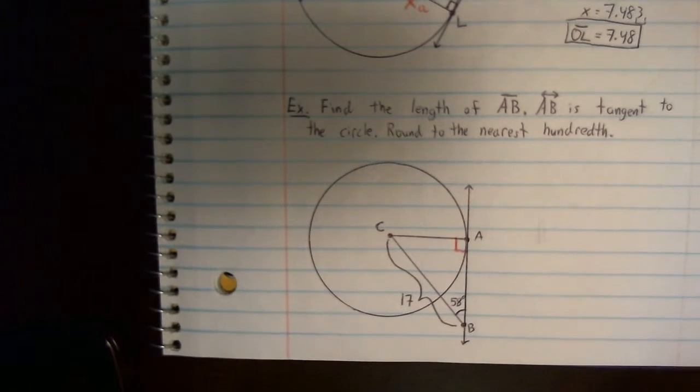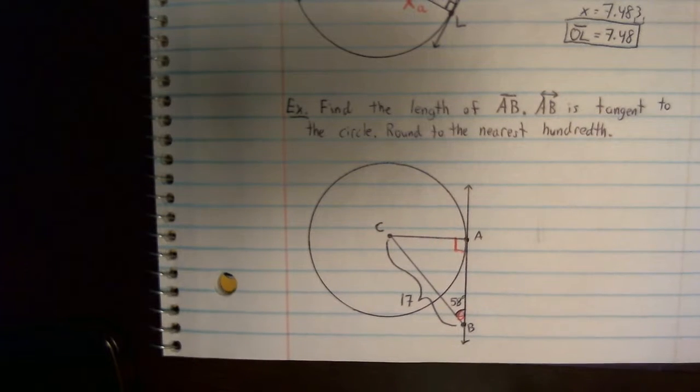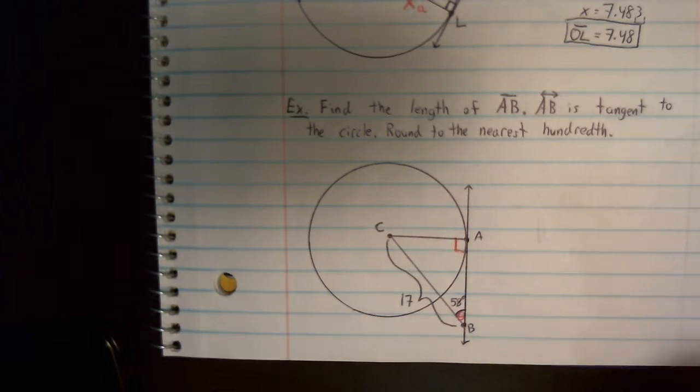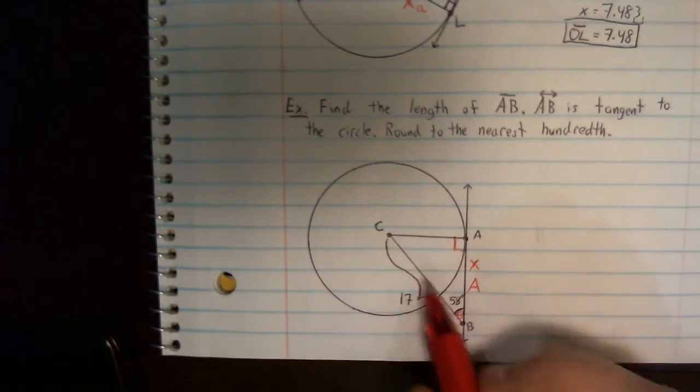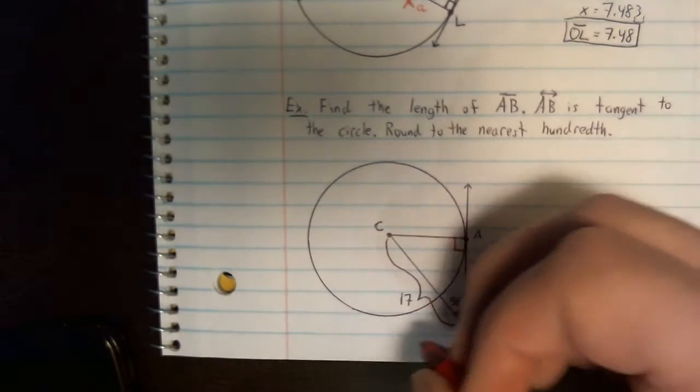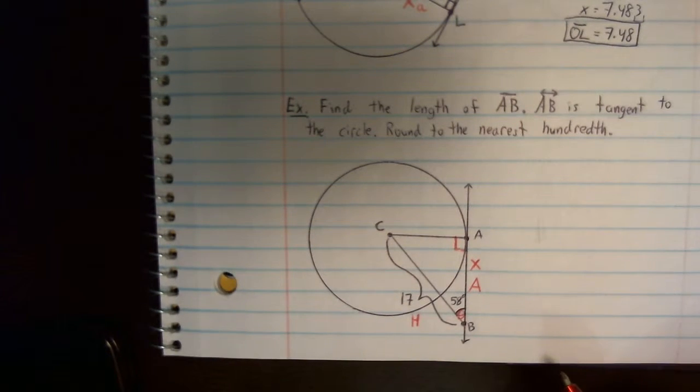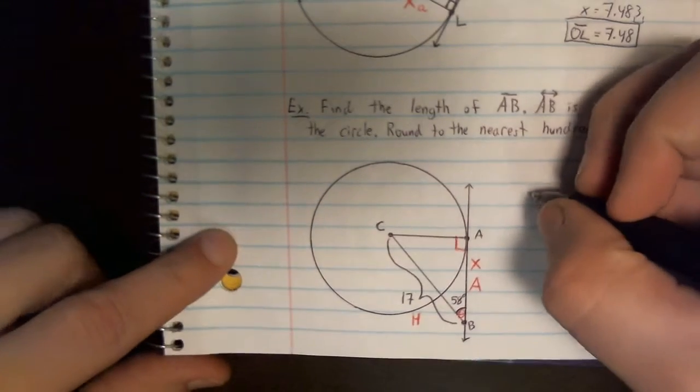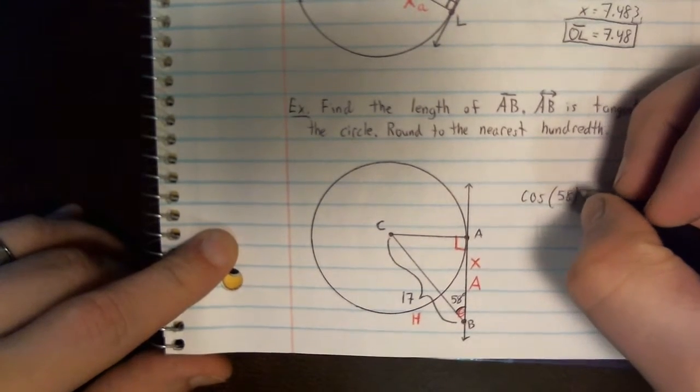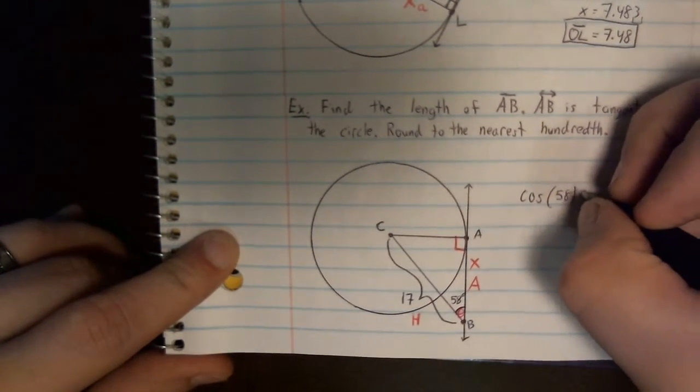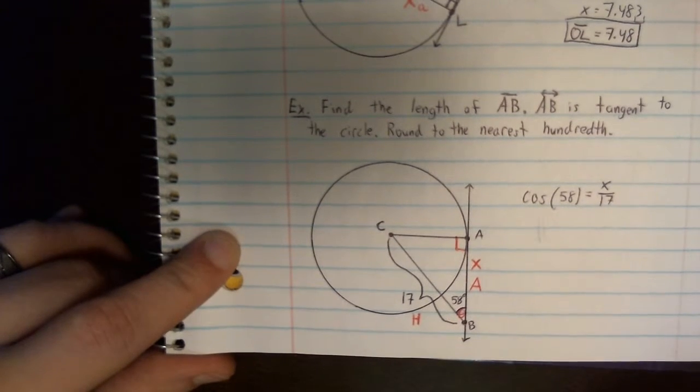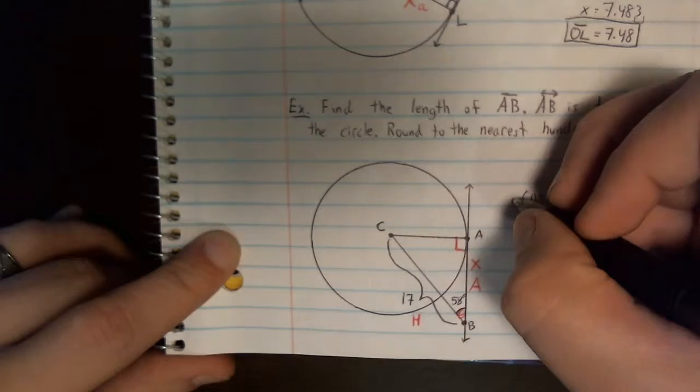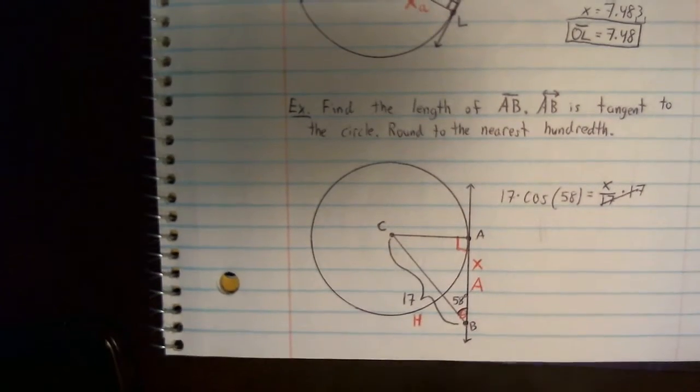So what we're going to do is we're going to put a theta marker at our angle, like we normally would. And then we're going to check the sides that they're asking for, AB. We'll put an X. That happens to be the adjacent side. The side they gave us, 17, happens to be the hypotenuse. So now I just have to think, SOHCAHTOA, which one uses A and H? Cosine. Cosine uses A and H. So I'm using cosine of a 58 degree angle. That's equal to adjacent over hypotenuse. And now I solve for X. So all I need to do here is multiply by 17 on both sides.